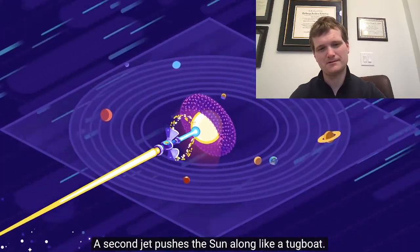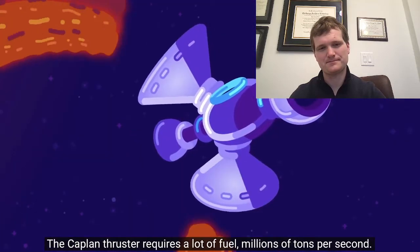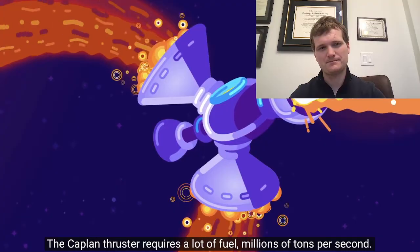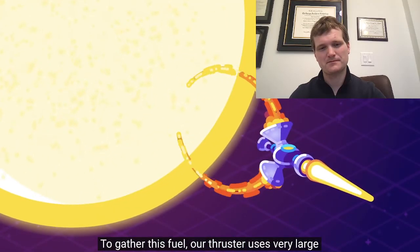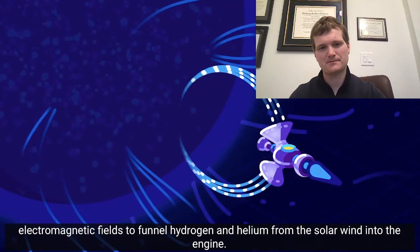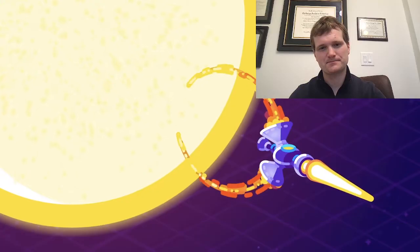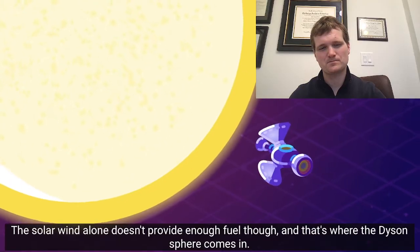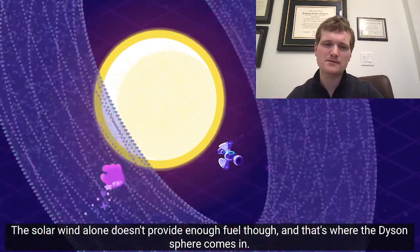A second jet pushes the sun along like a tugboat. The Kaplan thruster requires a lot of fuel, millions of tons per second. To gather this fuel, our thruster uses very large electromagnetic fields to funnel hydrogen and helium from the solar wind into the engine. The solar wind alone doesn't provide enough fuel, though.